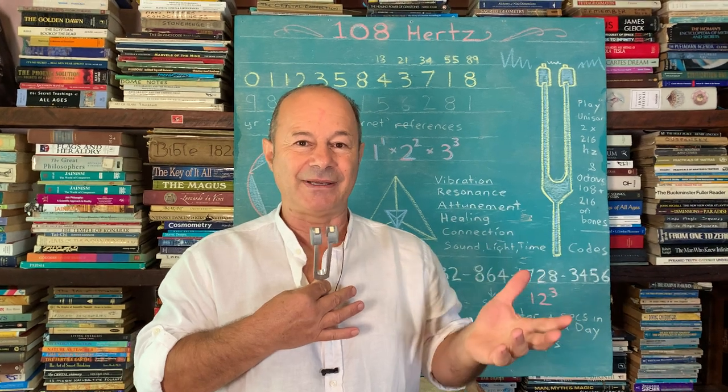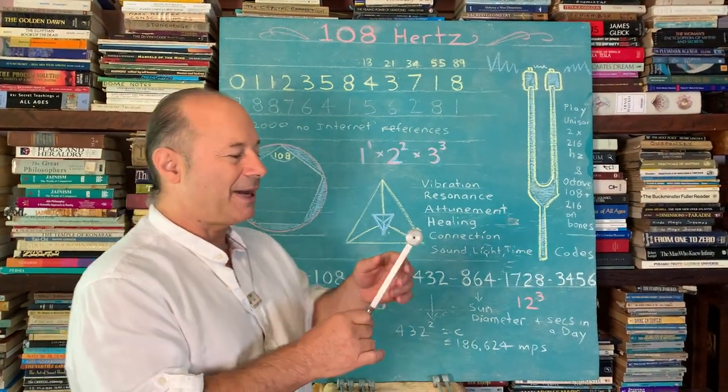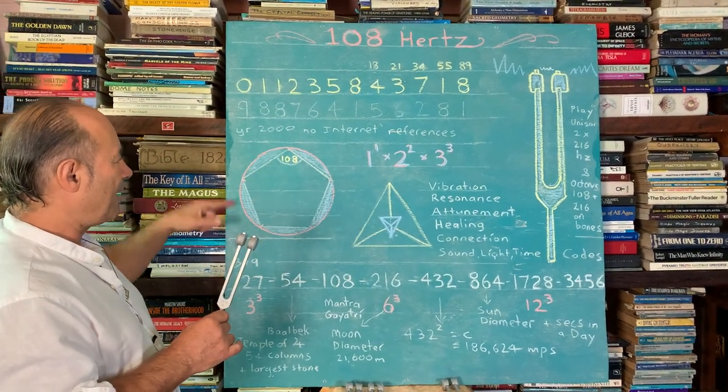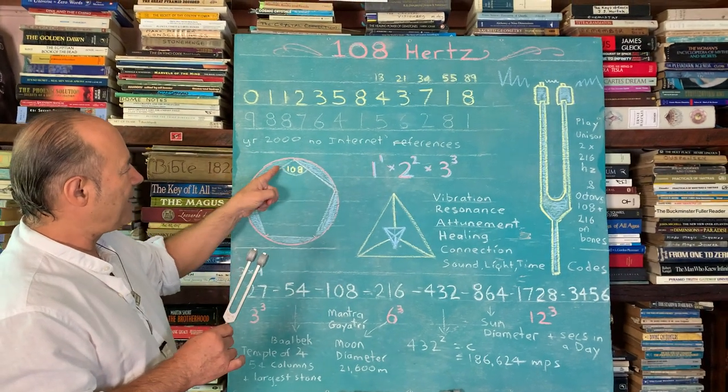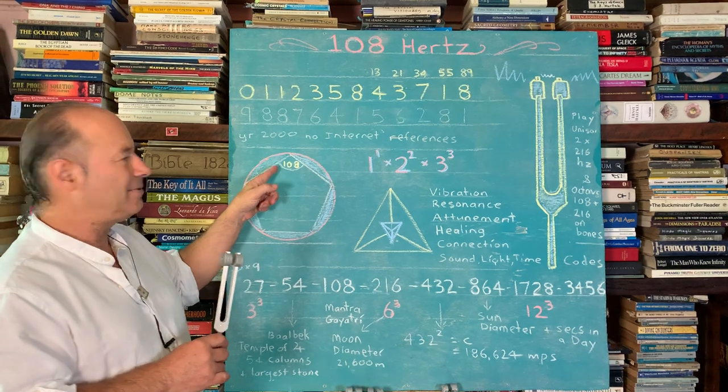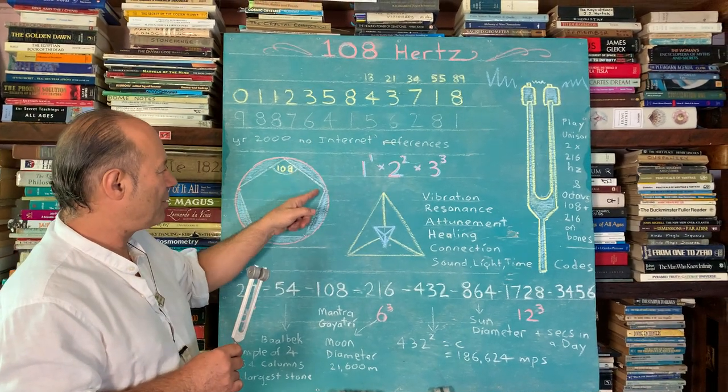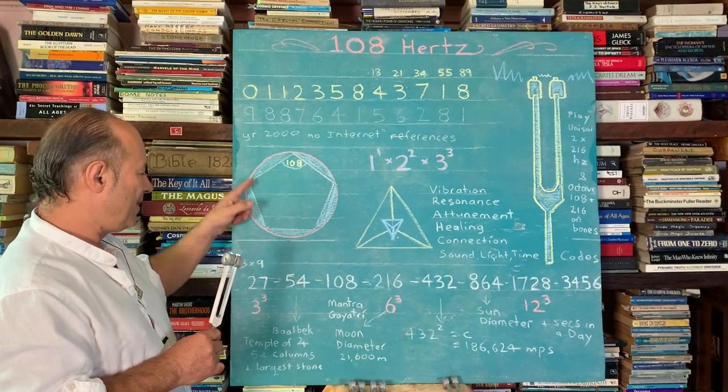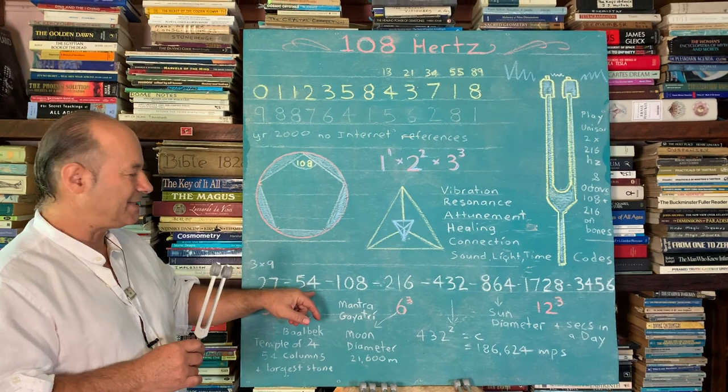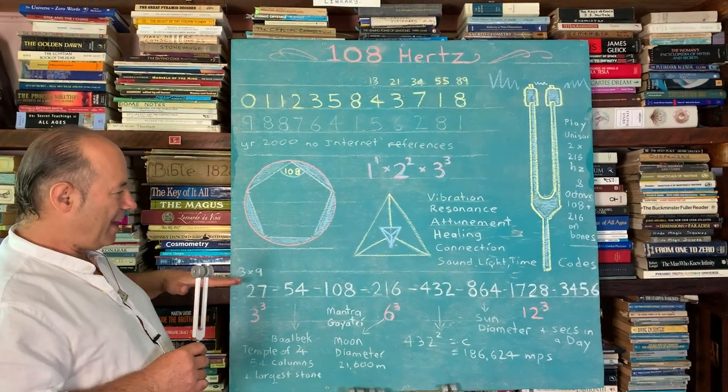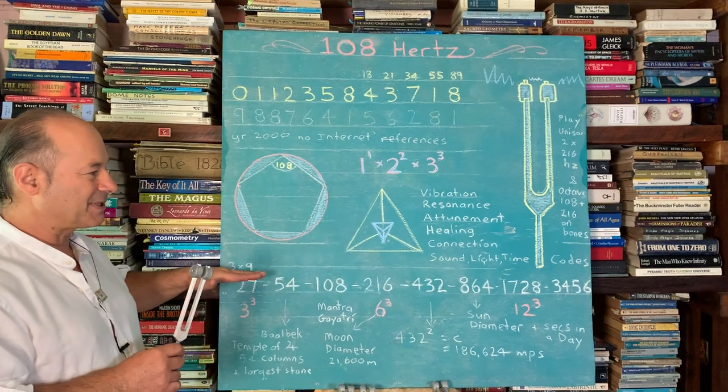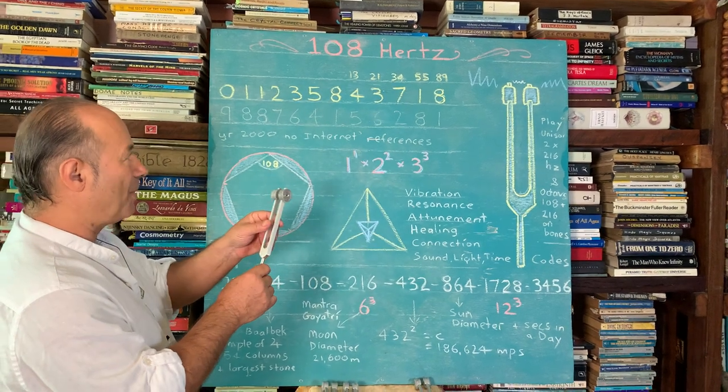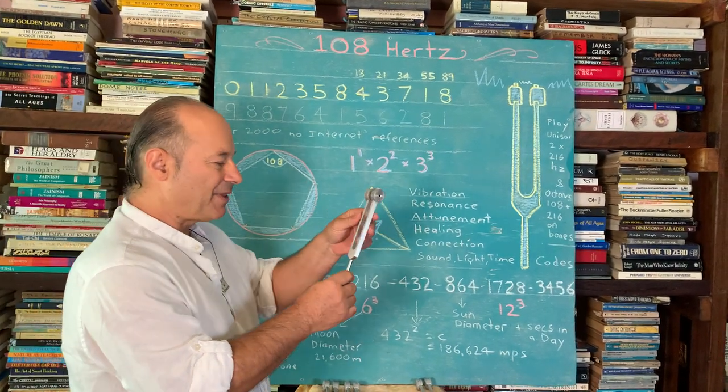The reason why 108 is sacred: most of you already know that 108 Hertz is based on the pentagonal symmetry. The internal angle of the pentagon is 108 degrees. If you add up all those angles, 108 times 5 equals 540. The harmonic of 540 is 54, and I'm leading up to this sequence.